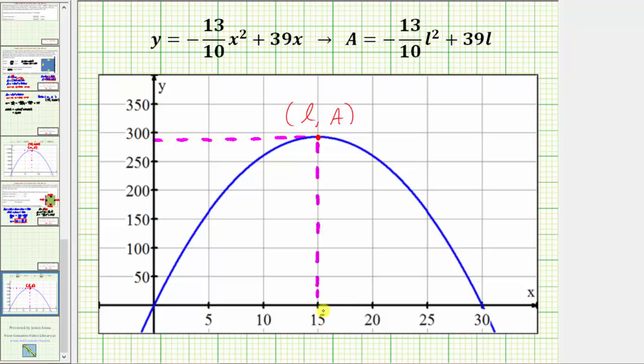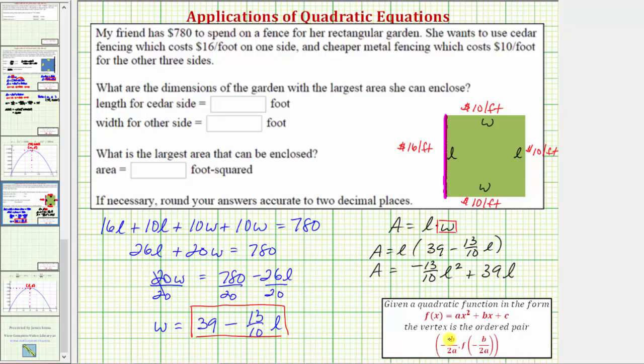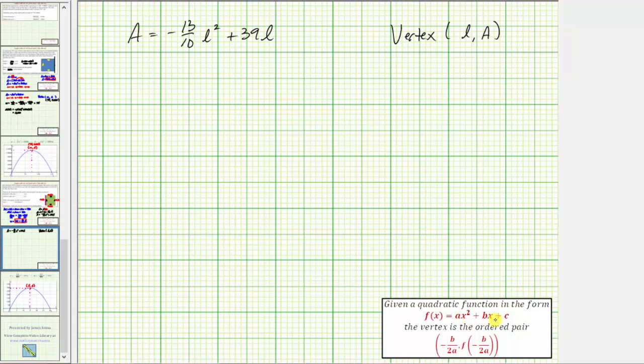Using our area equation, let's work on determining the vertex. First, identify a, b, and c from our equation. a is the coefficient of the squared term, so a equals -13/10. b is the coefficient of the degree one term, so b equals 39. We don't need c to find the vertex, but c is the constant term, which would be zero.